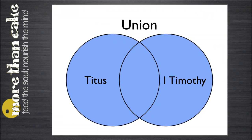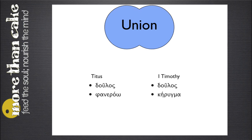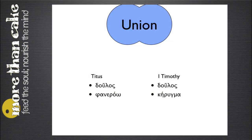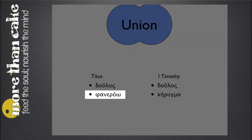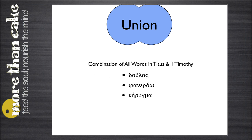First, we'll look at Union. Let's take Titus and 1 Timothy. To keep this simple and illustrate how each option works for word lists, I've selected three different words. The word doulos is in both lists of Titus and 1 Timothy. I've also selected one word unique to each book — in Titus, that's the word Phanero, and in 1 Timothy, the word Kerygma. When I select Union, the resulting list is the three unique words from both books of the Bible.